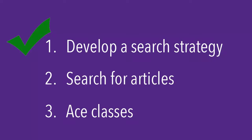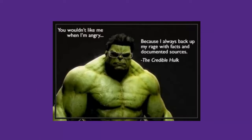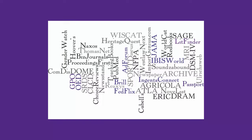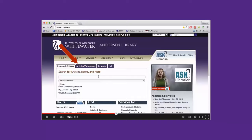After you have developed a search strategy, you can begin looking for articles in library databases. When you use databases, you can be confident that the information you are finding is from a credible source. The library subscribes to a wide variety of databases. Watch the Accessing Library Databases video to learn how to view all of the databases the library subscribes to.